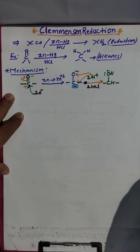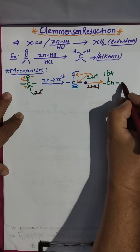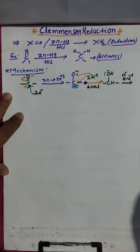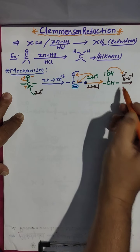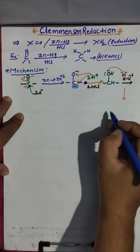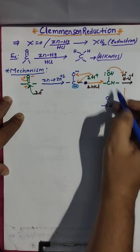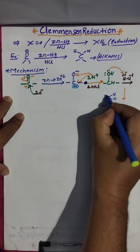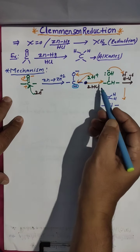Further, it will undergo reaction with HCl again. Hydrogen and chlorine — this oxygen has δ⁻ and HCl has δ⁺ on hydrogen. The oxygen donates a lone pair to HCl. Two hydrogens are now on the carbon, and the oxygen gains a positive charge.